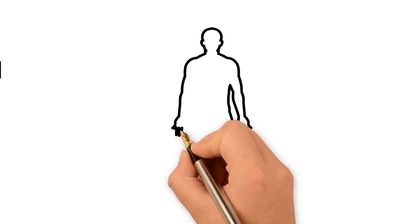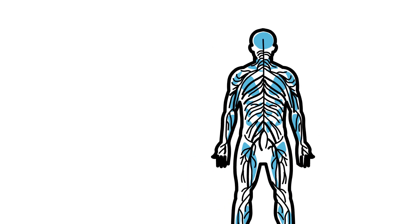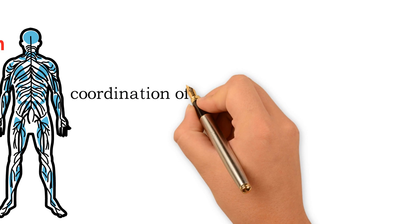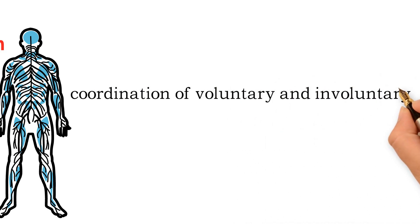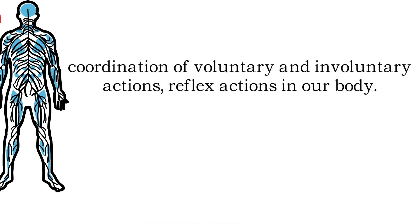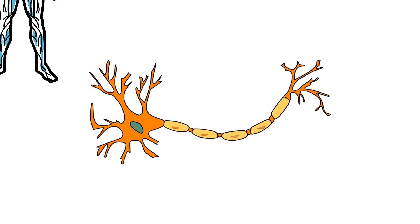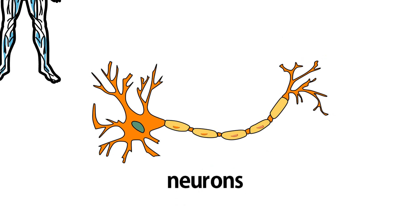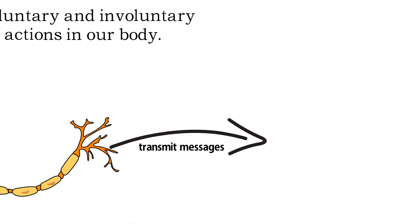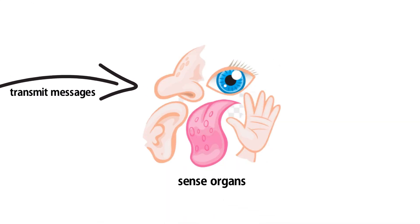The nervous system is a specialized system in animals. This system aids in the coordination of voluntary and involuntary actions and reflex actions in our body. The nervous system consists of nerve cells called neurons, which transmit messages in the form of electrical impulses through neurons and convey them to our sense organs.